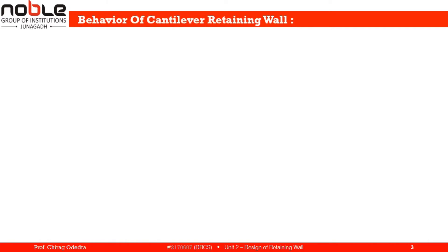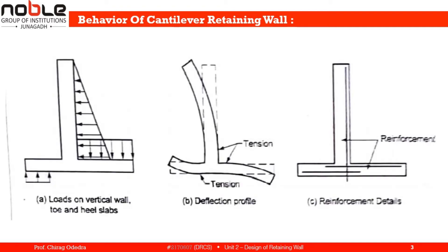Let us start with the behavior of a retaining wall, beginning with the behavior of a cantilever retaining wall. As we can see in the figure, the first figure shows the loads acting on a vertical wall, toe slab, and heel slab. This is one cantilever retaining wall — this is the stem, this is the toe slab, and this is the heel slab.